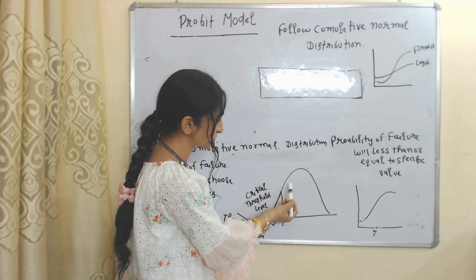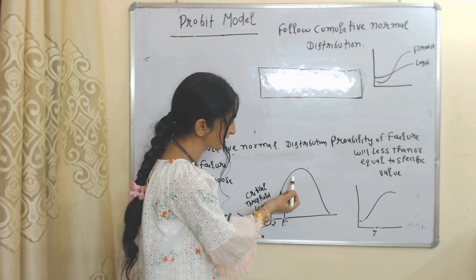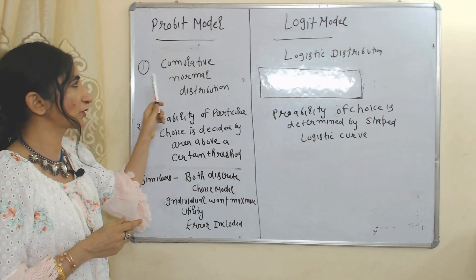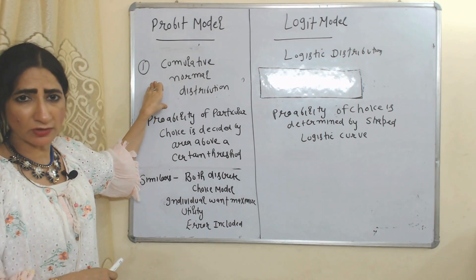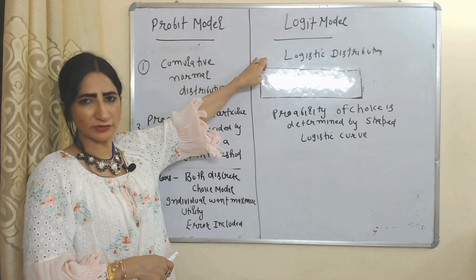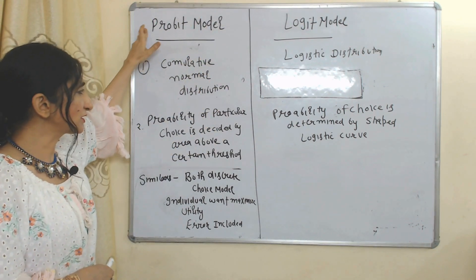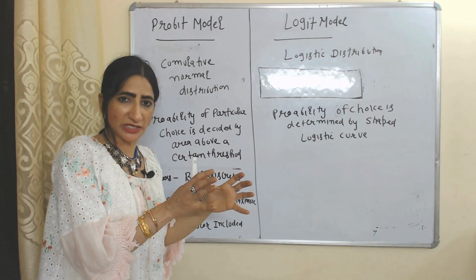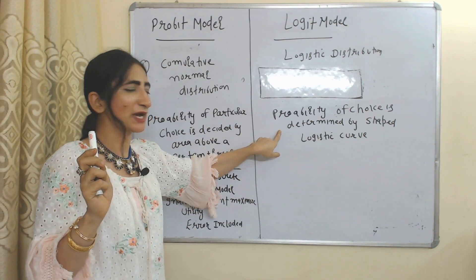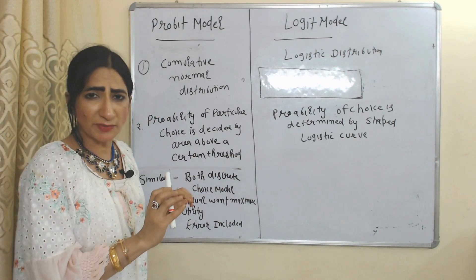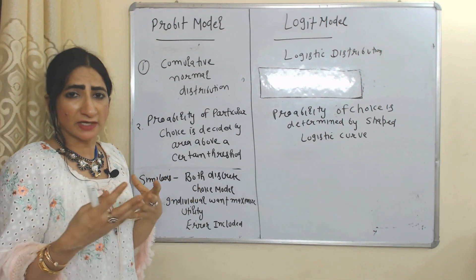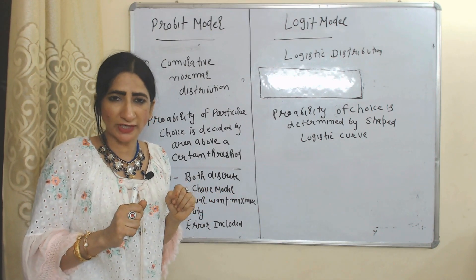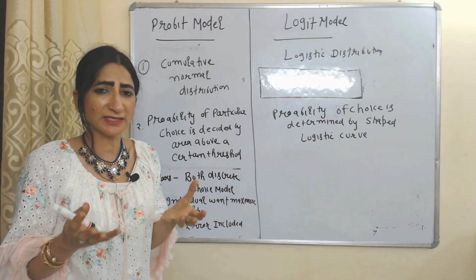Now let's see the similarities and differences between the probit and logit models. The probit model follows cumulative normal distribution, while the logit model follows logistic distribution. In the probit model, the probability of a particular choice is determined by the area above a certain threshold; in the logit model, it is determined by the shape of the logistic curve. Similarities: both are discrete choice models, both are used when we have to make choices from a limited set of alternatives, in both models individuals want maximum satisfaction, and both models include an error term.